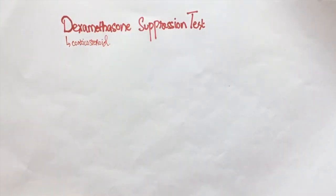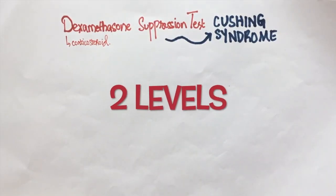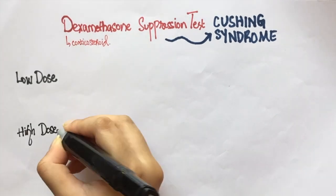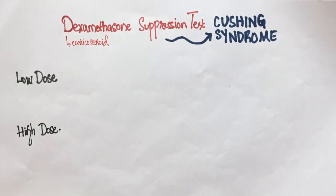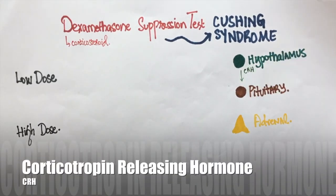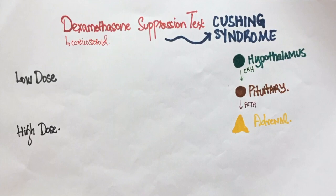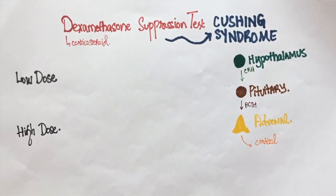Dexamethasone is basically a corticosteroid. It can be used to diagnose Cushing's syndrome. This can be done at two levels: a low-dose dexamethasone test and a high-dose dexamethasone test. Under normal circumstances, the hypothalamus produces corticotropin-releasing hormone. This triggers the pituitary to release adrenocorticotrophic hormone. ACTH ultimately goes to the adrenals and stimulates it to secrete cortisol. Cushing's syndrome is a condition in which there is a lot of cortisol in the blood.